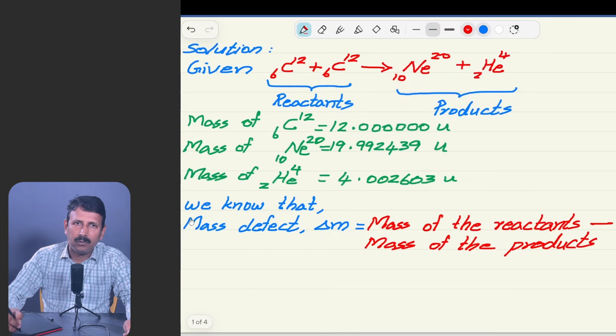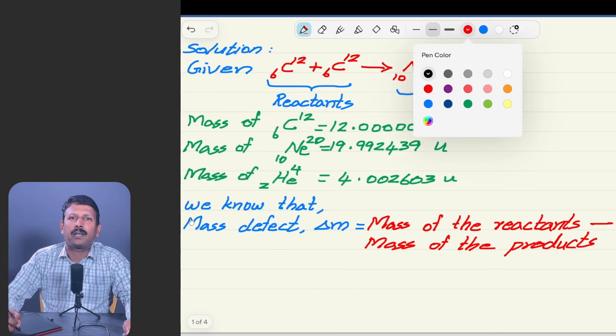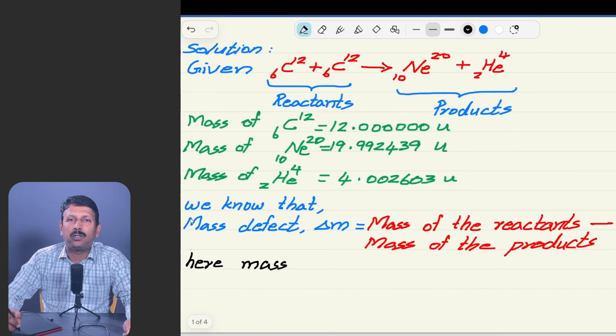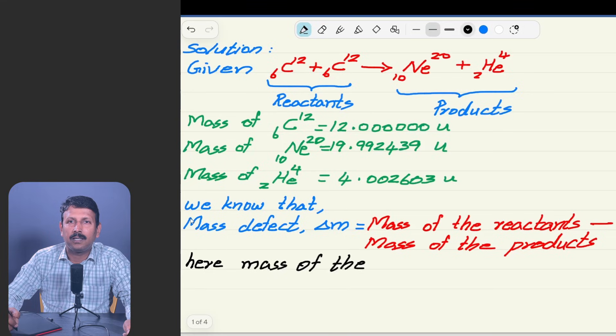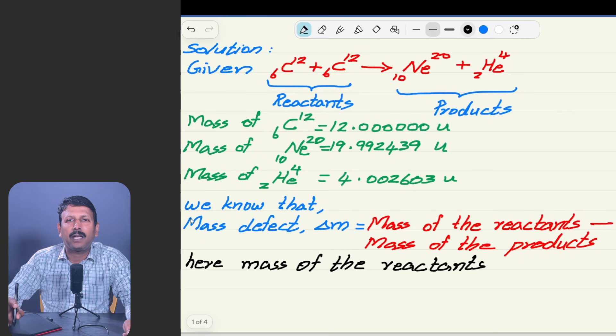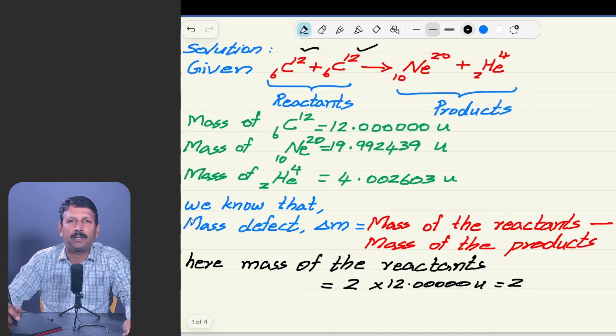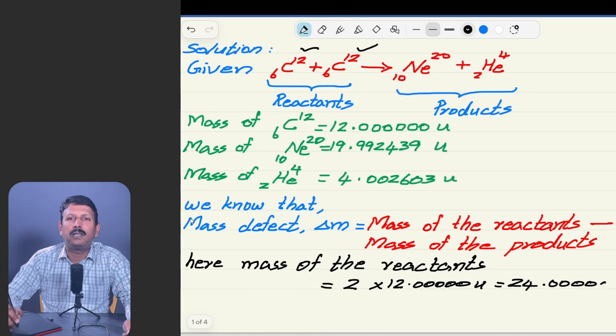So, we can have a calculation now. First we will do the mass of the reactants part and then we can do the mass of the products part, then straight subtraction we have to do. Here mass of the reactants is equal to - there are 2 atoms right, C₁₂⁶, so 2 times the mass of 1, that is 12 atomic mass units, that is equal to 24 u.